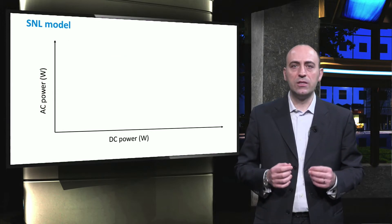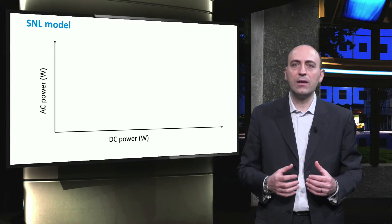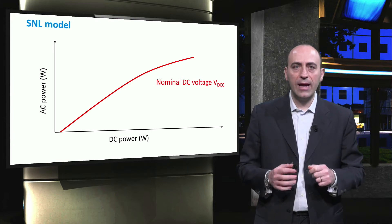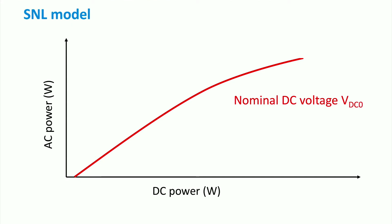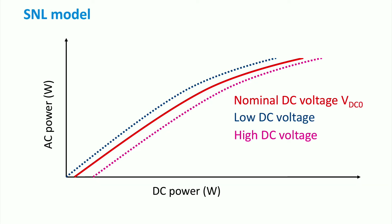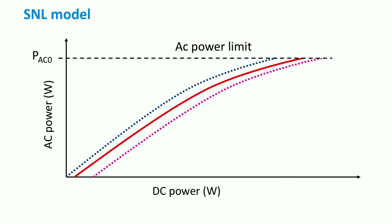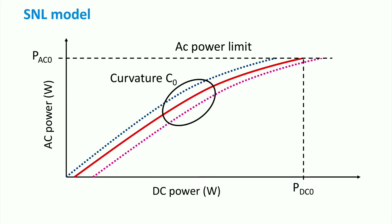With the SNL model, it is possible to define some parameters that help describe the efficiency. Let's consider a device working at the nominal voltage VDC0. It is possible to notice that the pattern changes whether we work with a lower or a higher voltage. It is important to underline that in the graph shown, the non-linearity of the input-output behavior of the inverter is emphasized. The AC power limit for which the inverter is designed is PAC0, and it provides the nominal DC power PDC0 when it crosses the nominal voltage line. The curvature C0 is the parameter used to describe the non-linear nature of the inverter characteristic. Additionally, other parameters are usually provided such as PS0, which is the self-consumption of the inverter, and the PNT, or night tare, of the inverter.